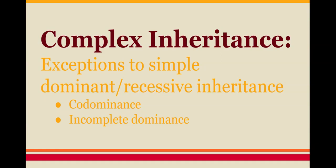Hi guys, so this video is looking at complex inheritance. You guys have kind of come from simple Mendelian genetics, where genes have two copies that you get — one from mom, one from dad. We've talked about different vocabulary for what you can have on those genes: two dominant copies, one dominant one recessive, or two recessive copies. The basis we're working on is that genes have two versions or two alleles, a dominant and a recessive.